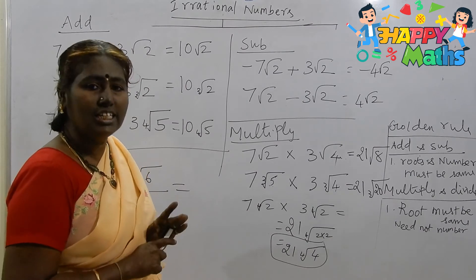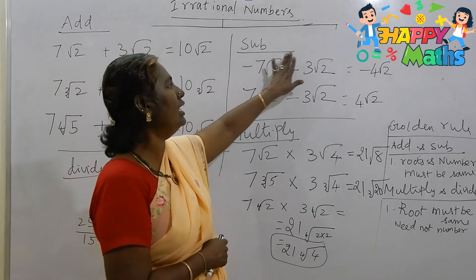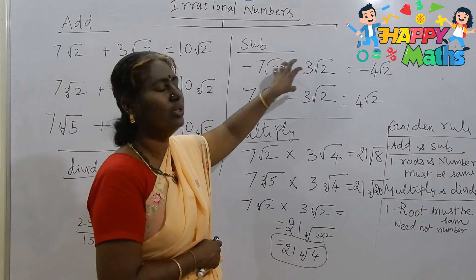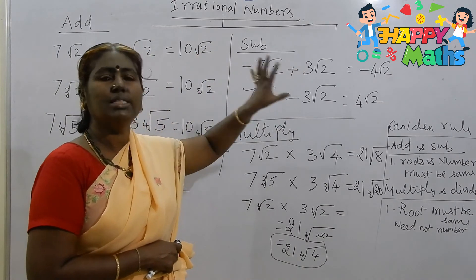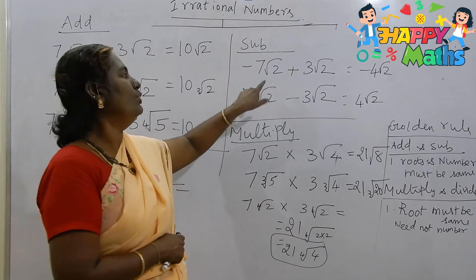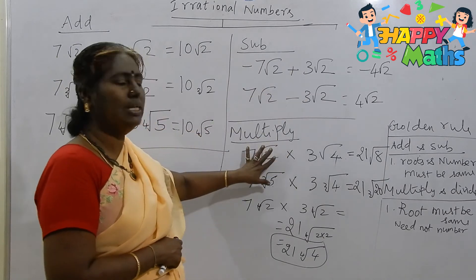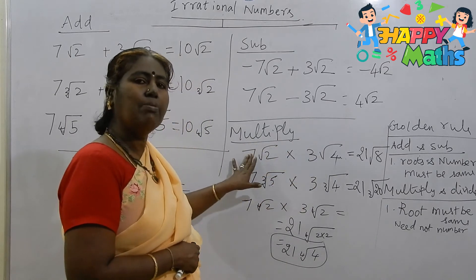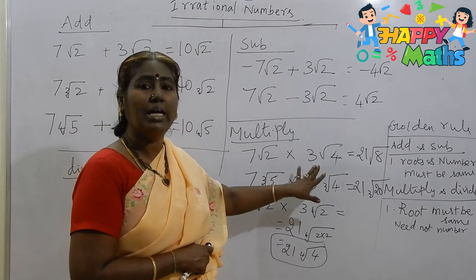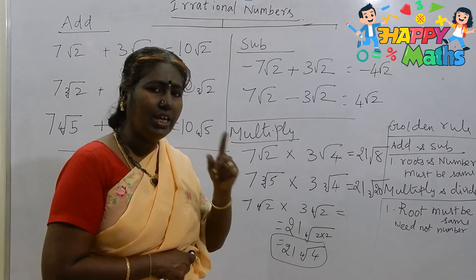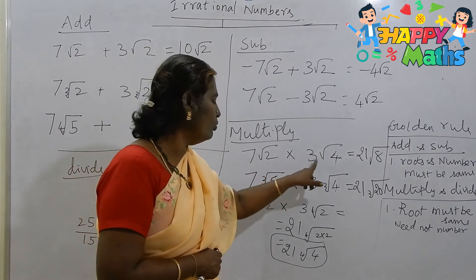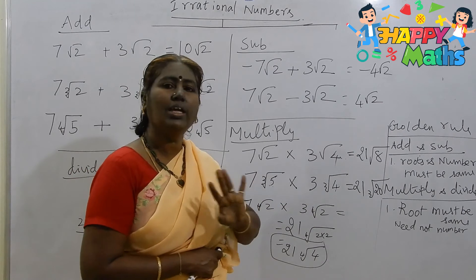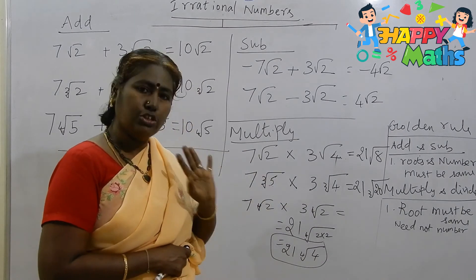So for addition and subtraction, don't deal with the root number — only the number which comes before the root must be added or subtracted; think of it as a donkey. For multiplication, deal with the whole number first, then multiply the root number. You must be very very careful whether both roots are the same or not. If the roots are different, you cannot multiply at all.